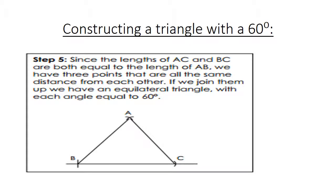Since the length of AC and BC are both equal to the length of AB, we have three points that are all the same distance from each other. If we join them, we have an equilateral triangle which means each angle is now equal to 60 degrees.